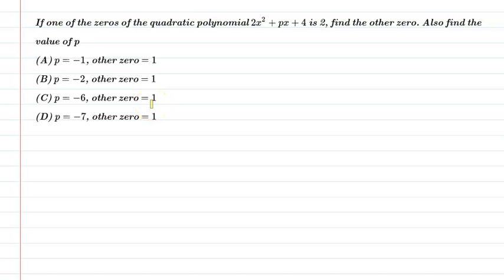Hello students, first of all let us understand the question. If one of the zeros of the quadratic polynomial 2x² + px + 4 is 2, then find the other zero and also find the value of p.